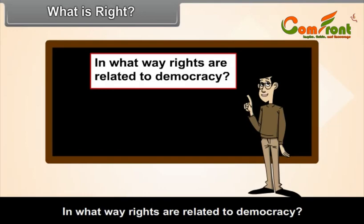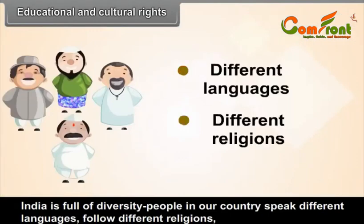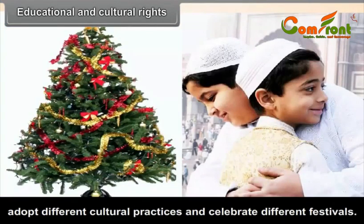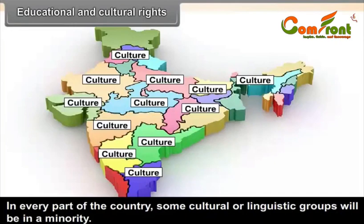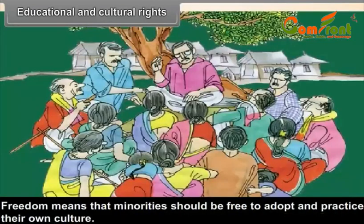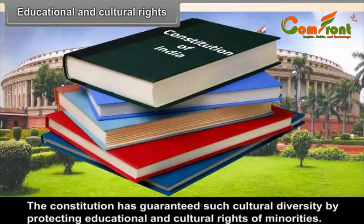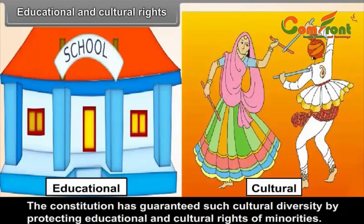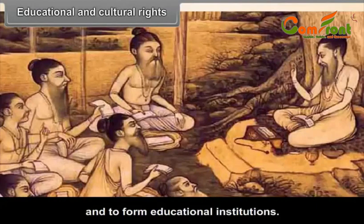Rights are related to democracy. Educational and Cultural Rights: India is full of diversity. People speak different languages, follow different religions, adopt different cultural practices, and celebrate different festivals. This is possible only when we do not force people to give up their own cultural practices and adopt the culture of the majority. In every part of the country, some cultural or linguistic groups will be in a minority. Freedom means that minorities should be free to adopt and practice their own culture. The Constitution has guaranteed such cultural diversity by protecting the educational and cultural rights of minorities, giving them the right to protect their culture and to form educational institutions.